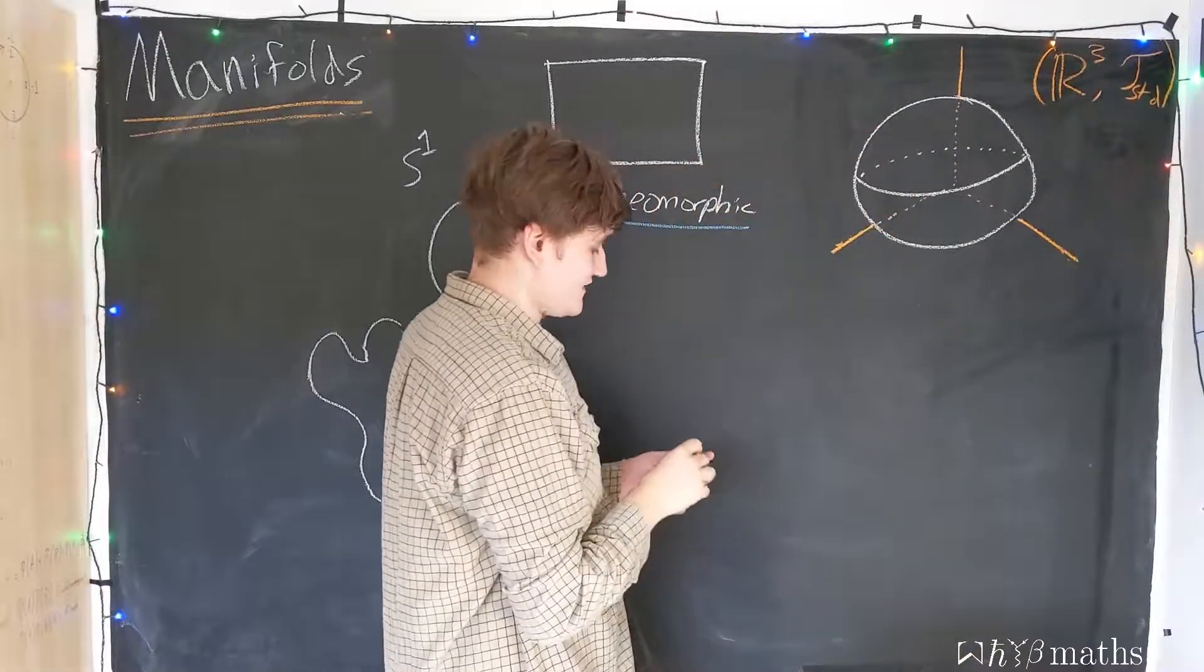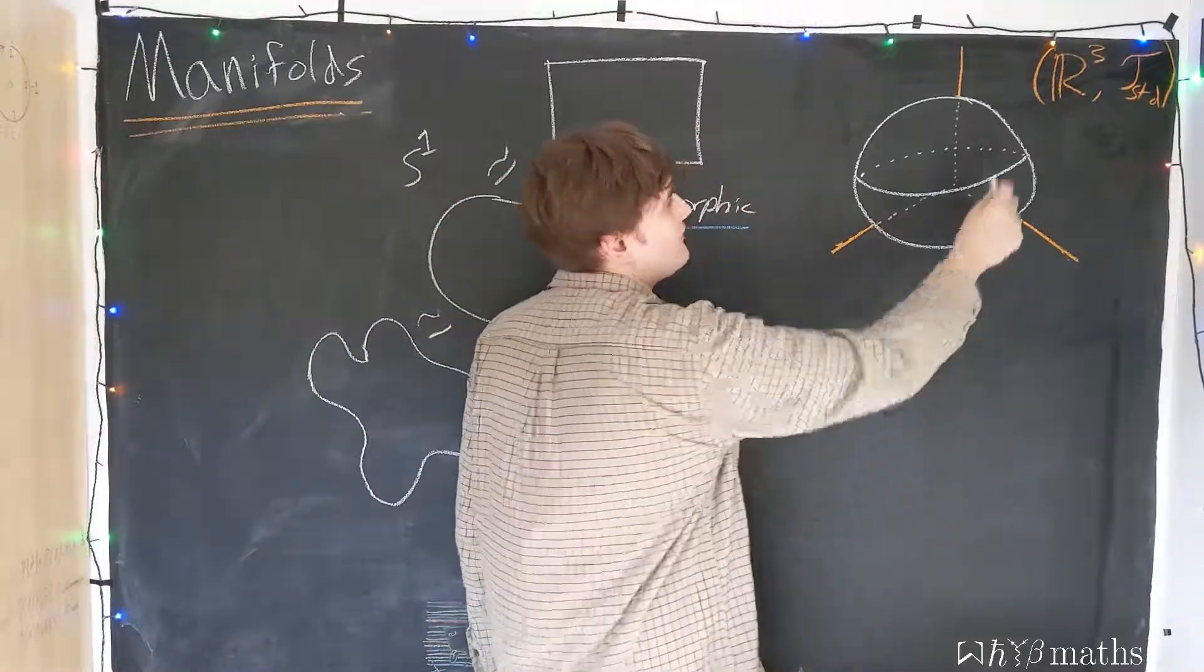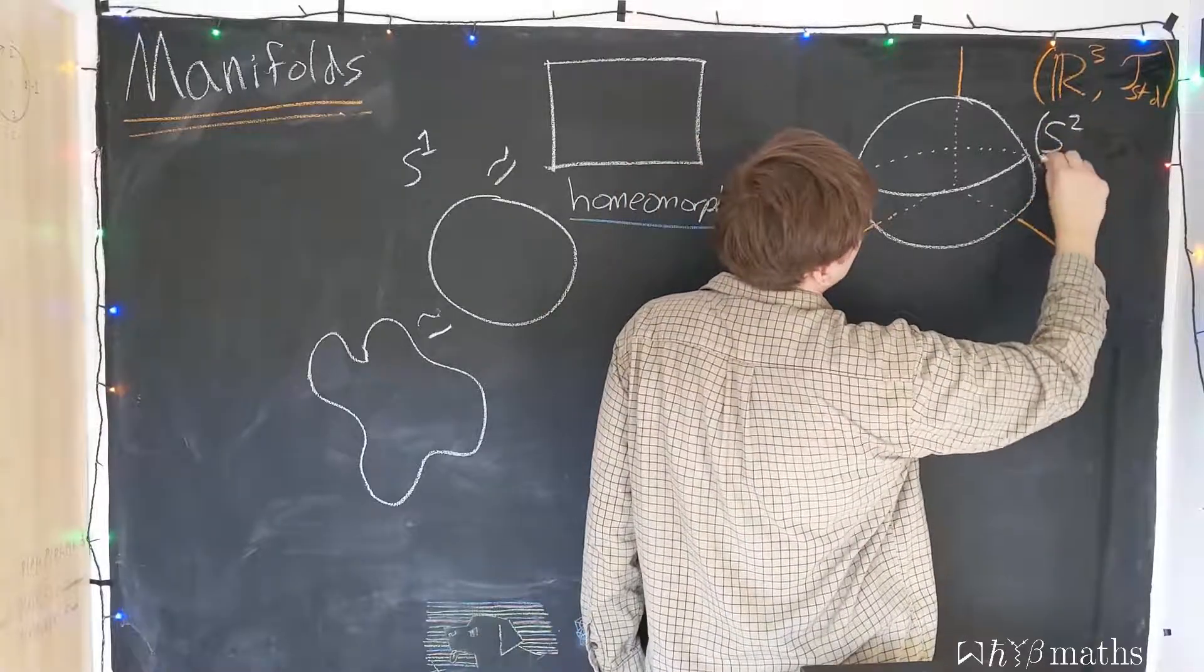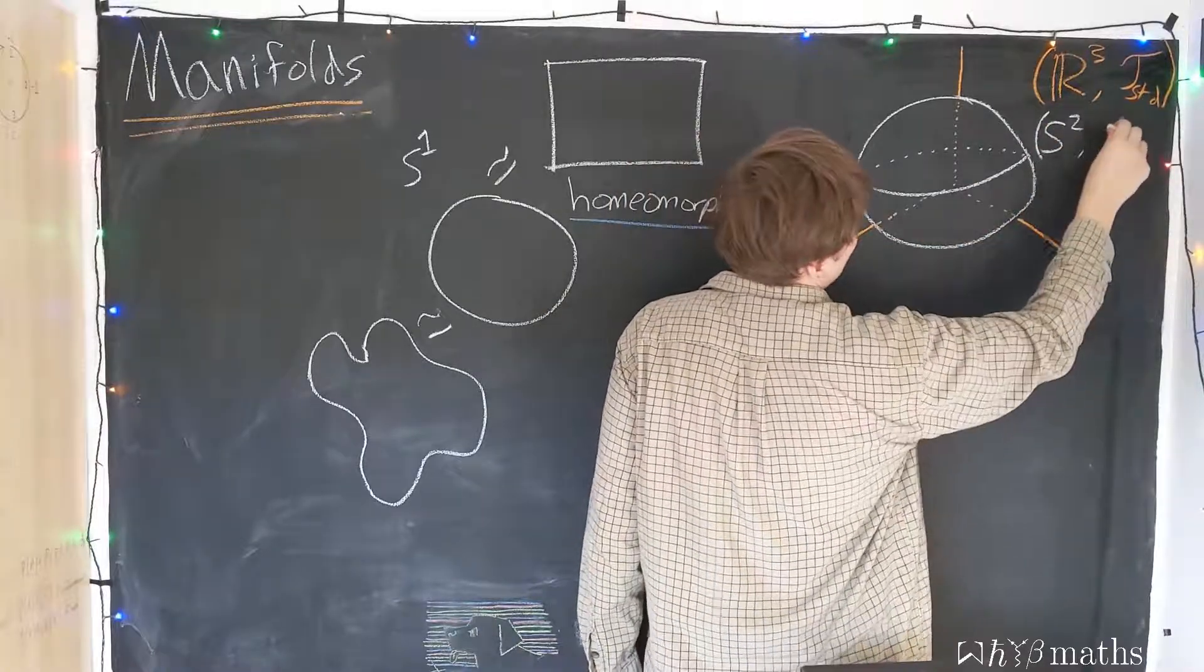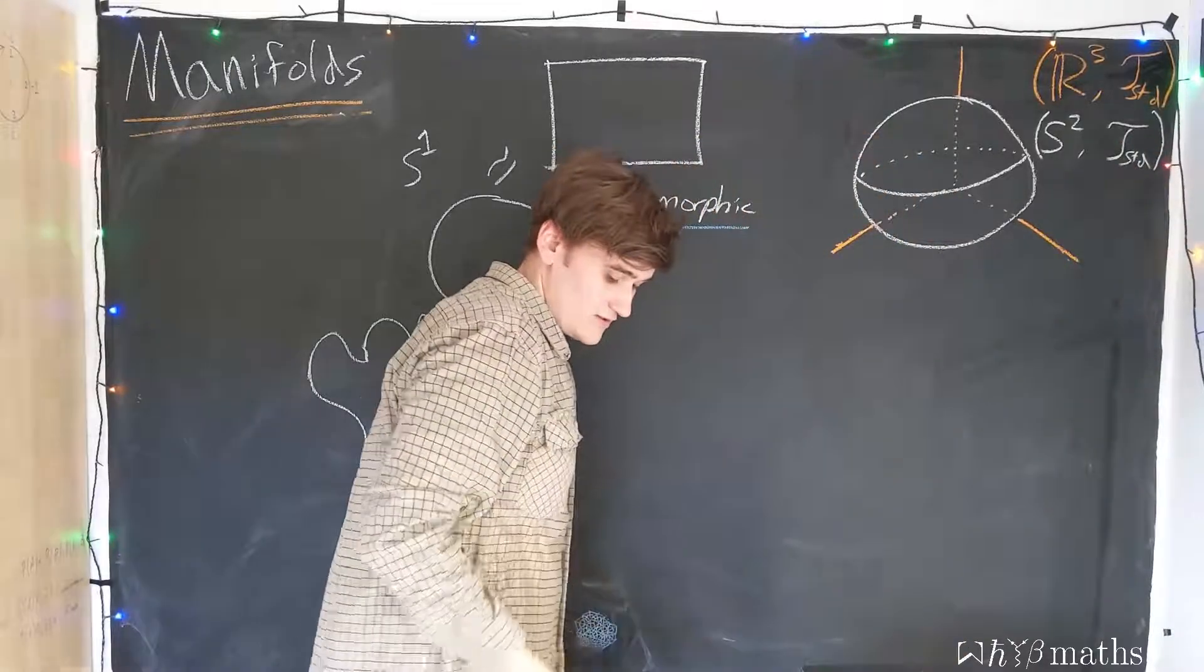And now this embedded topological space, or embedded manifold, this sphere, S2, is going to inherit the topology from the embedding space. So, it'll also carry a standard topology.